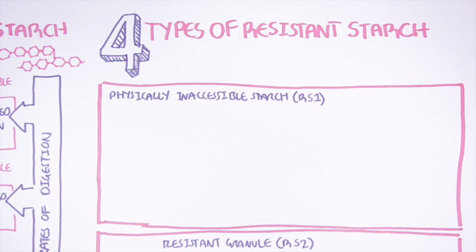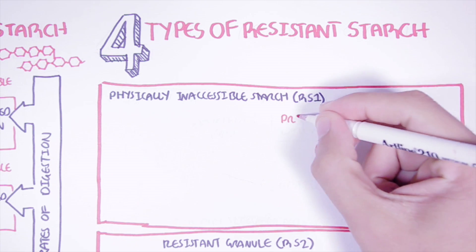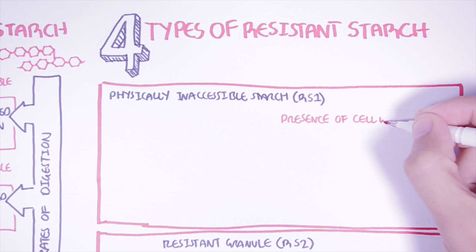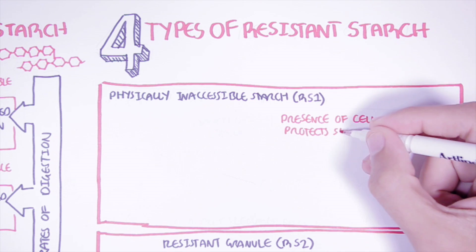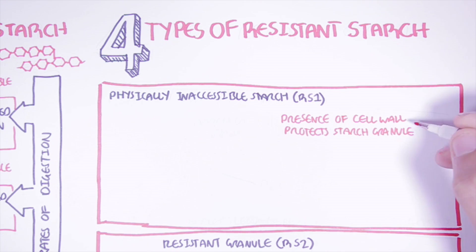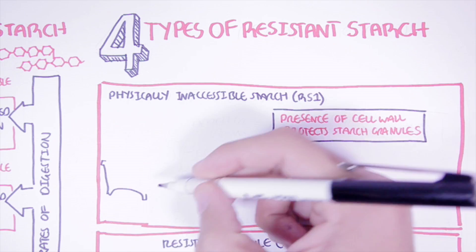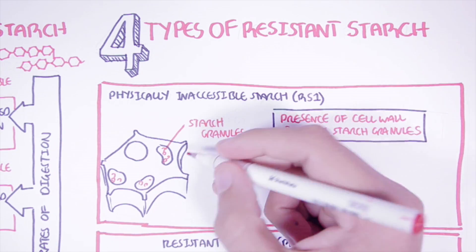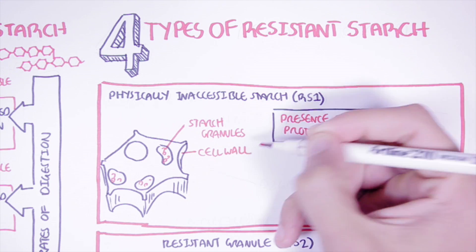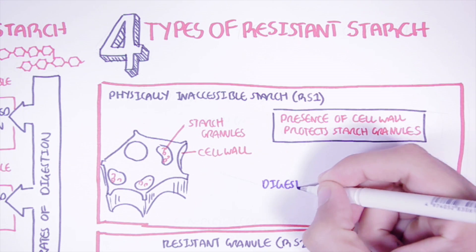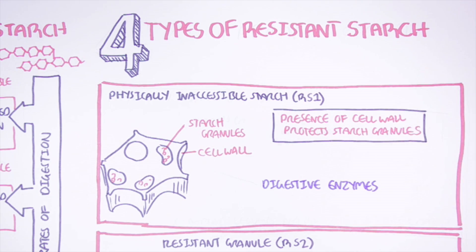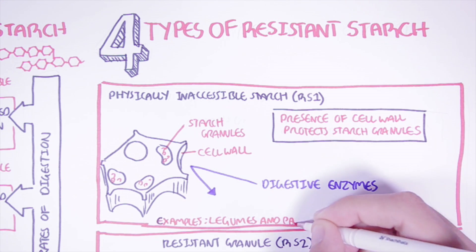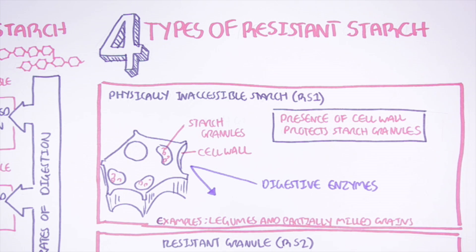Type 1 resistant starch is physically inaccessible starch. A good example is the presence of the cell wall that protects the starch granules. Here is a plant cell with its tough cell wall, and within it are starch granules within the plastids. With the cell wall intact, the digestive enzymes secreted by humans cannot access the starch. Foods high in type 1 resistant starch are legumes and partially milled grains.